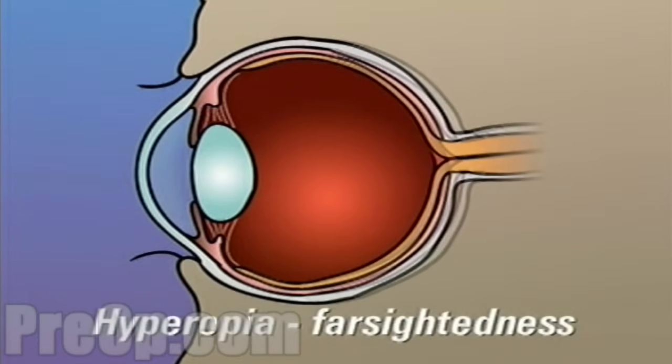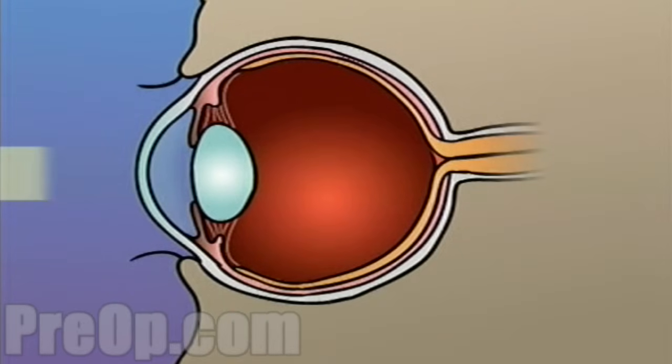Hyperopia, or farsightedness, occurs when the shape of the eye is too short. In this case, light rays are focused on a point behind the retina.